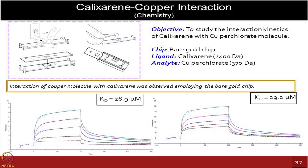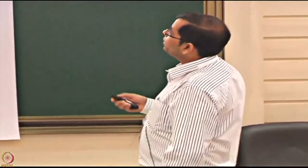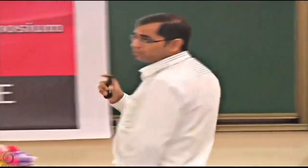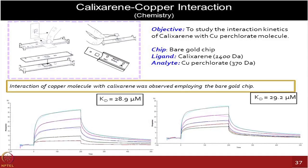I am flashing through a couple of application slides to show what can be done on these platforms — these are results from our facility. For example, one chemistry faculty lab was looking at a calyxarene molecule and copper binding. No ready-made chip was available, so we gave them the bare gold chip and they performed their own immobilization. After that, the SPR experiment was carried out on the Biacore chip, and the KD values obtained from two different experiments were pretty close, confirming the reproducibility of the immobilization.